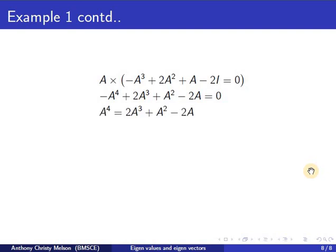Rearranging gives me A power 4 equal to 2A cubed plus A squared minus 2A. When we apply the Cayley-Hamilton theorem here, we can replace A cube in terms of A squared, A and I.